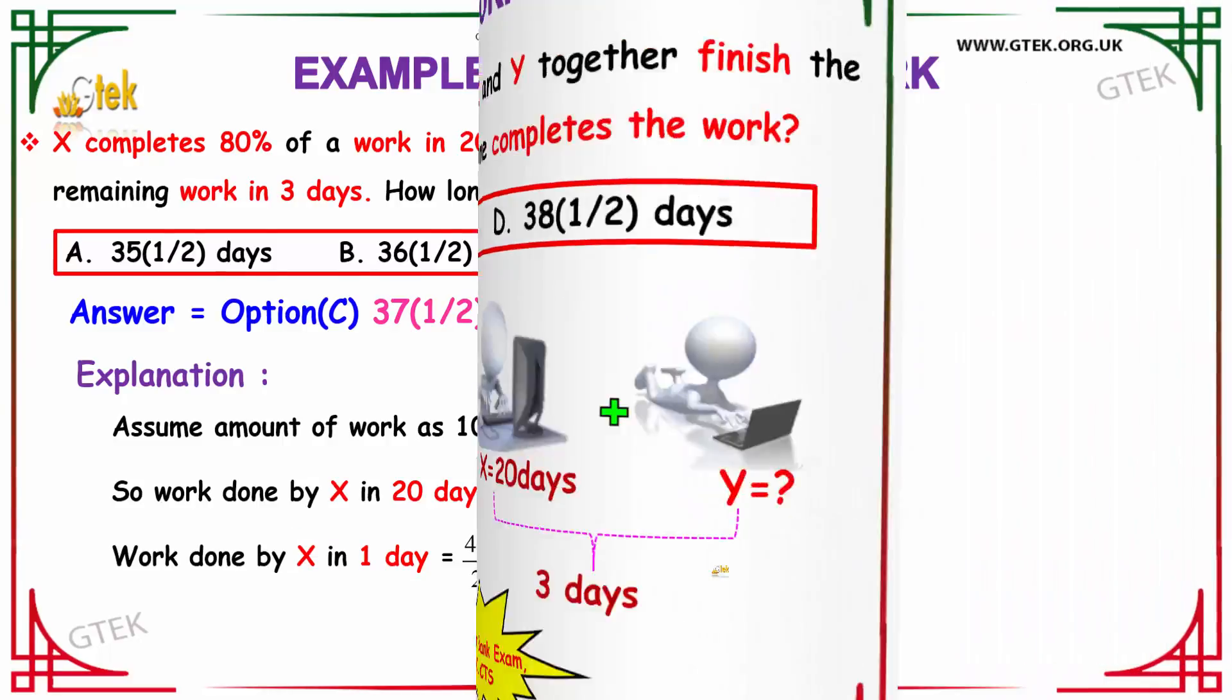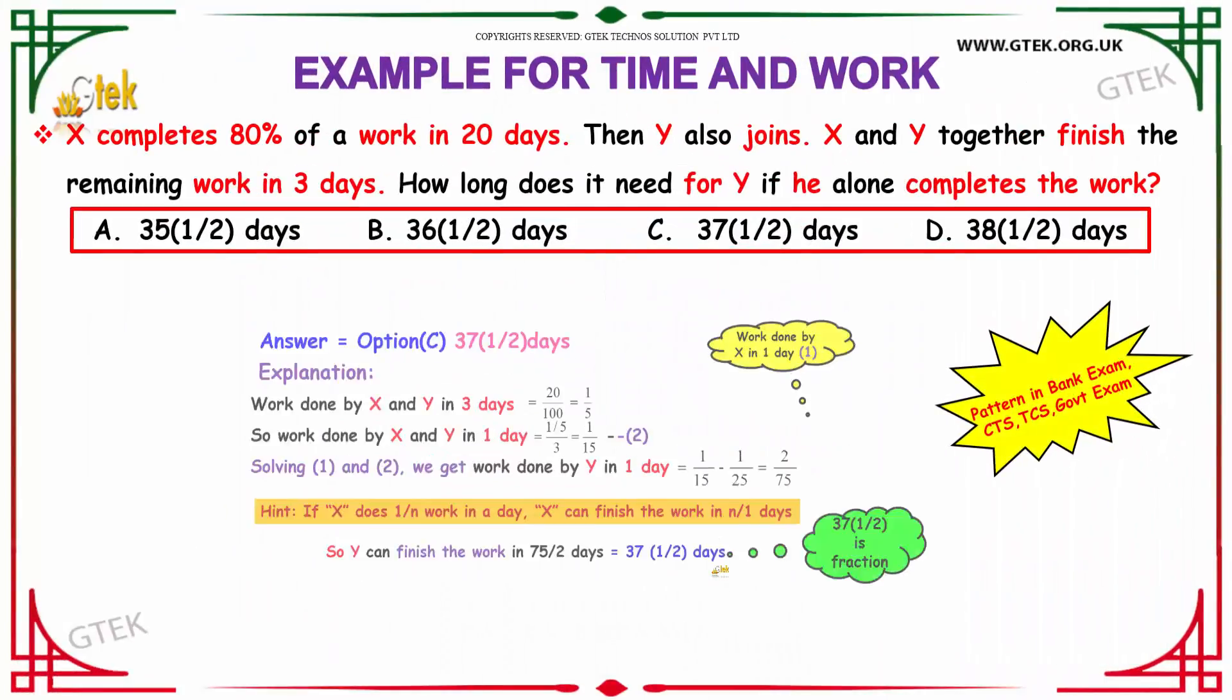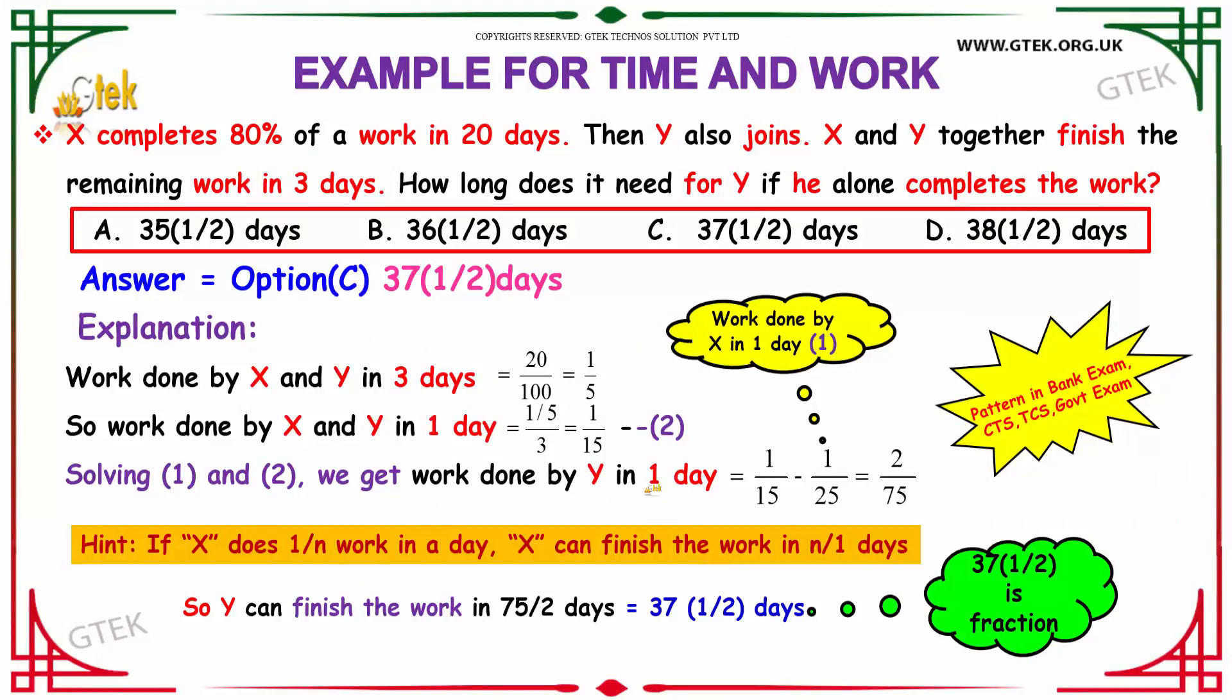Now, we have to find the work done by Y and X together in 3 days. So, they did the remaining work. So, remaining of 80% is nothing but 20%. So, 20 by 100 which is equivalent to 1 by 5 on simplification. So, the work done by X and Y in 1 day will be nothing but 1 by 5 divided by 3 which is equal to 1 by 15.